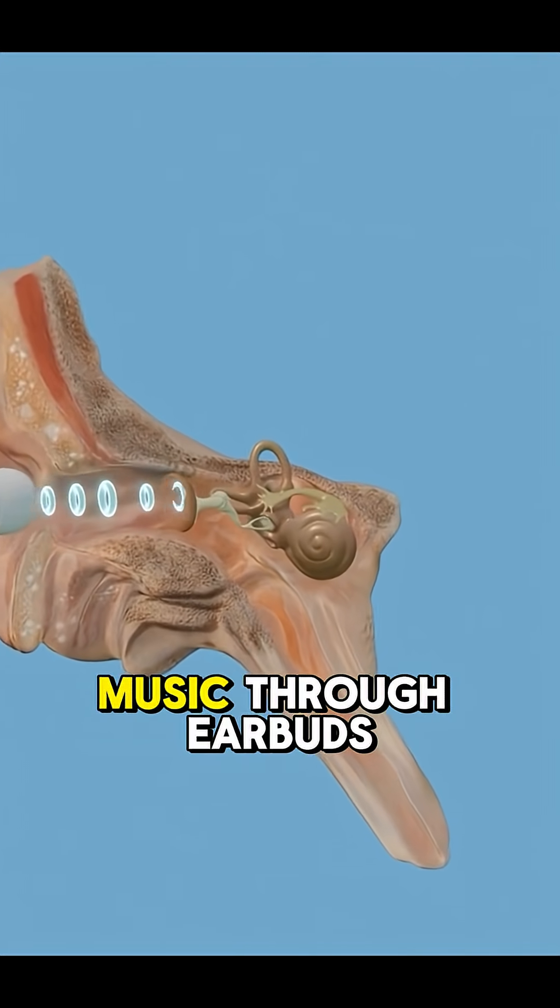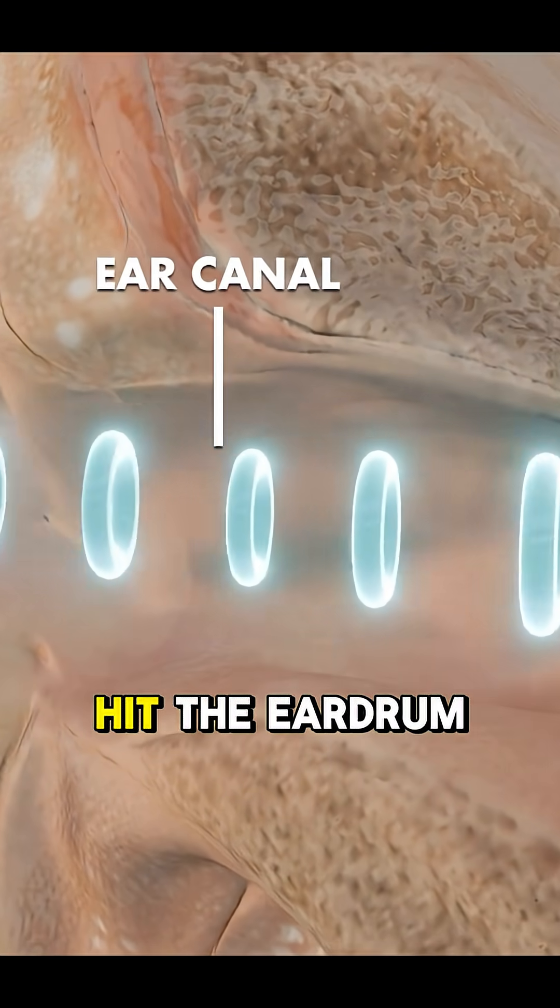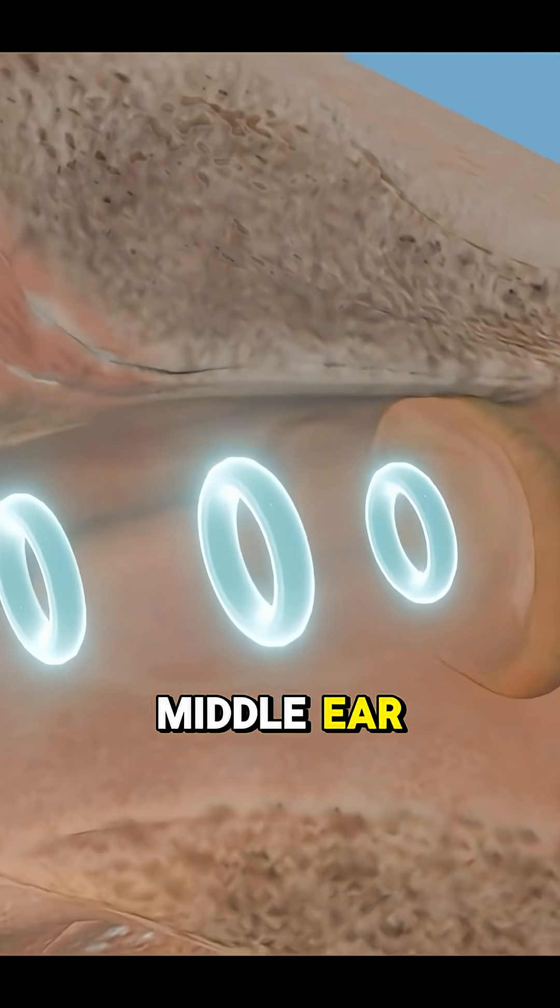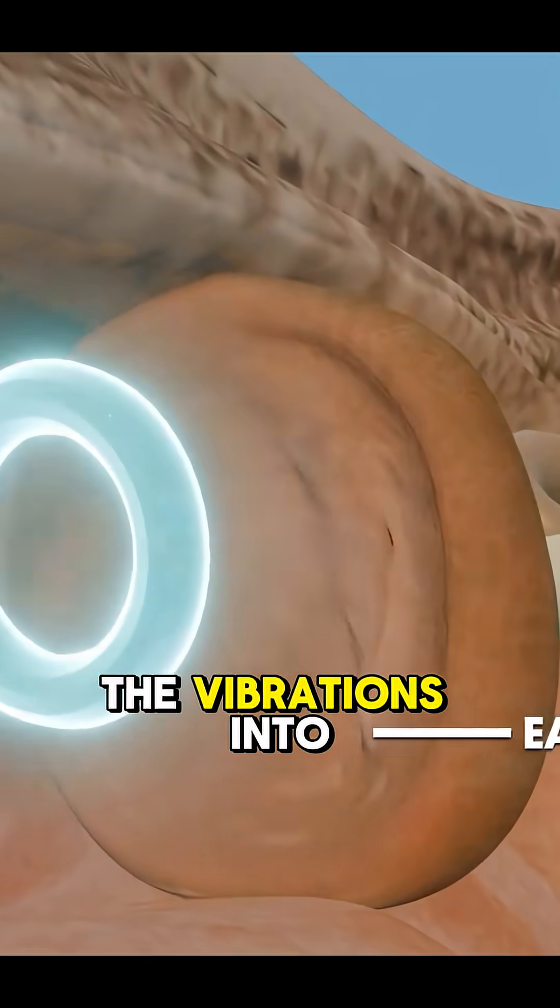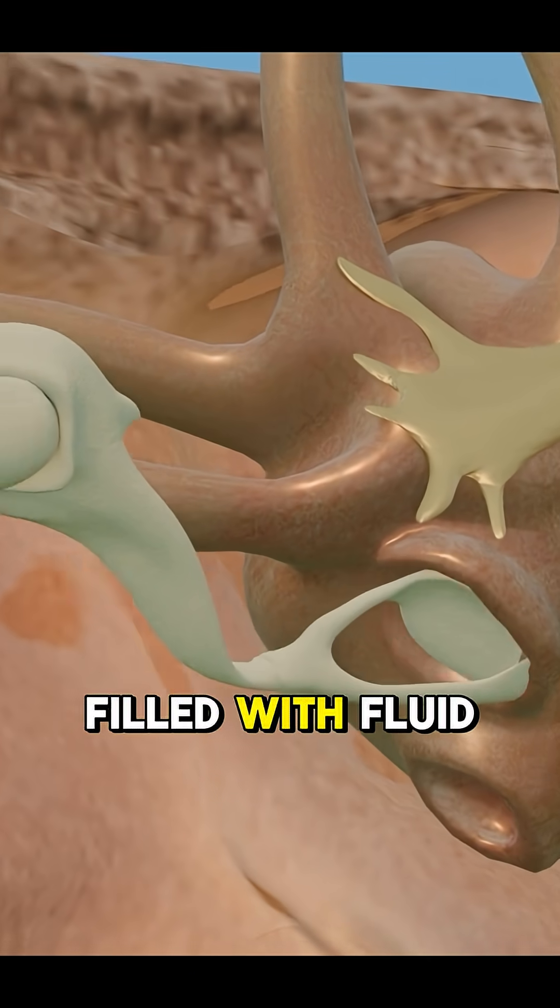When you blast music through earbuds, sound waves enter your ear canal, hit the eardrum, and shake tiny bones in your middle ear. These bones send the vibrations into a coiled structure called the cochlea, filled with fluid.